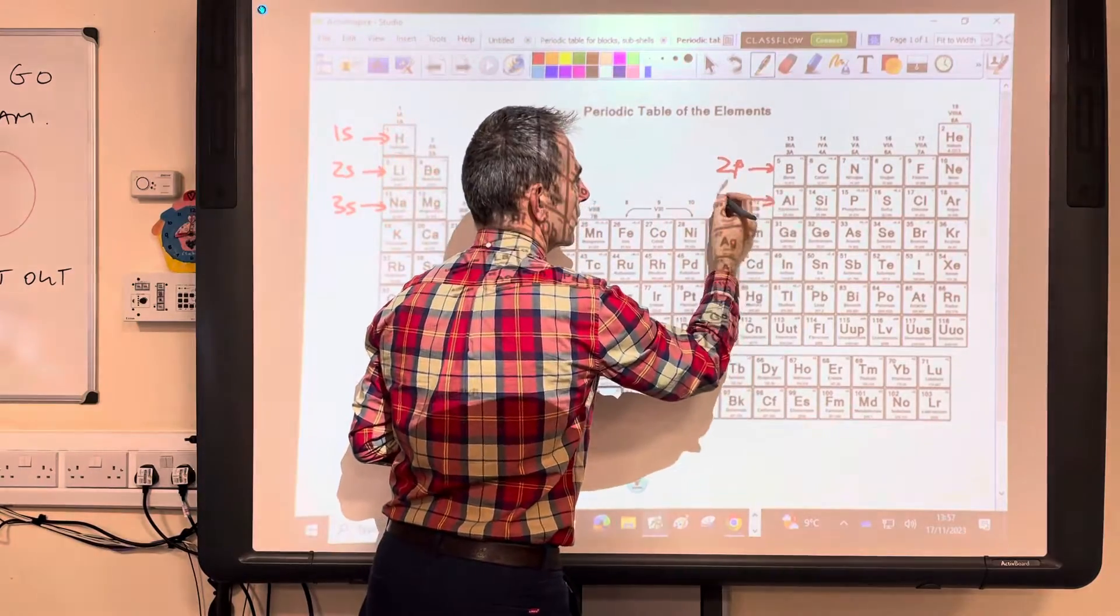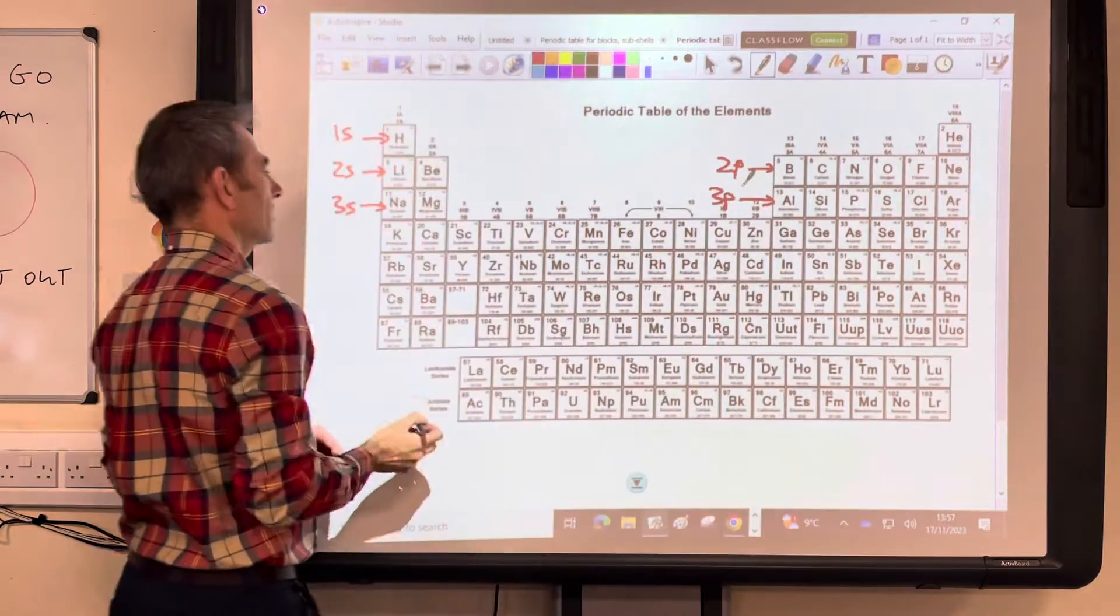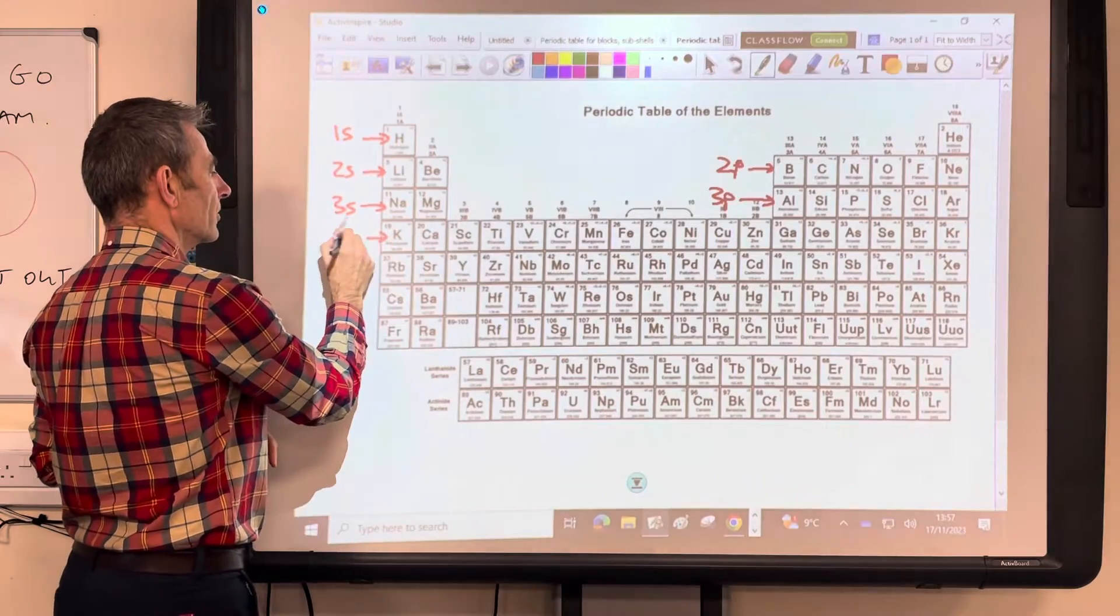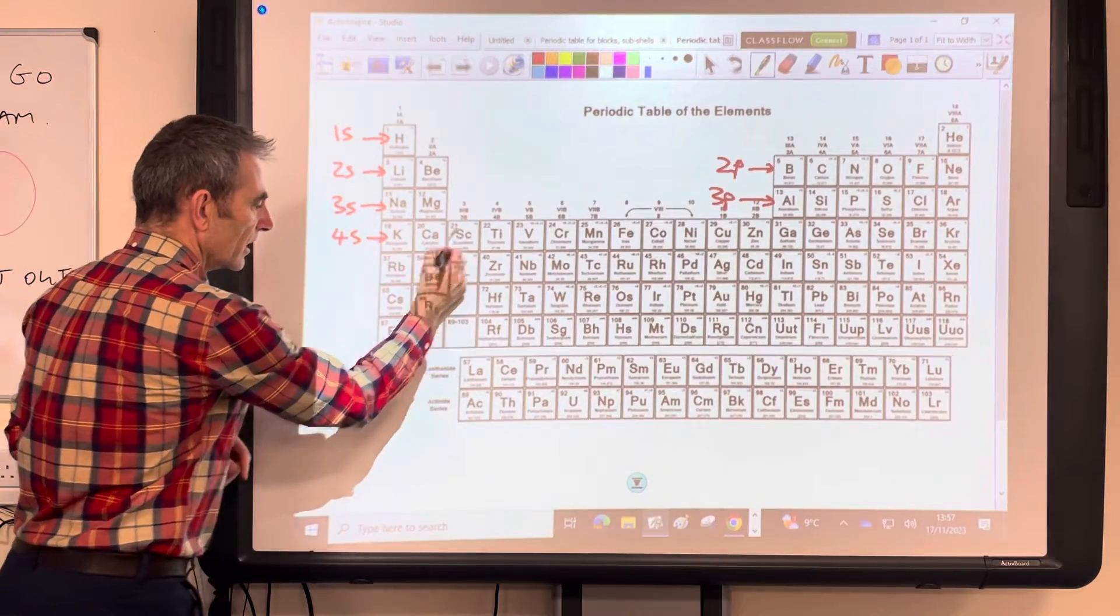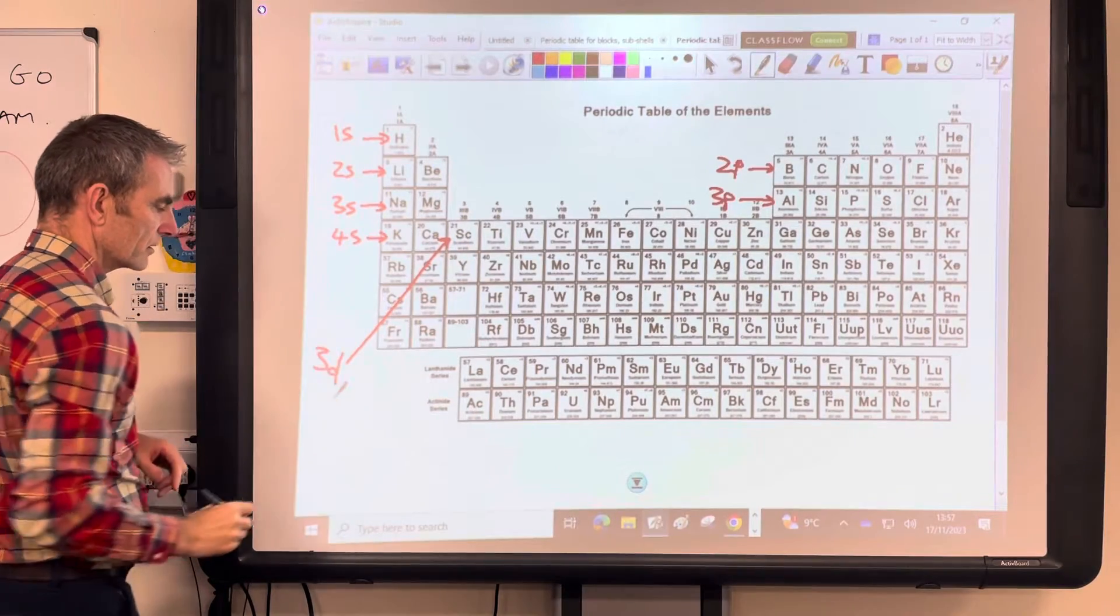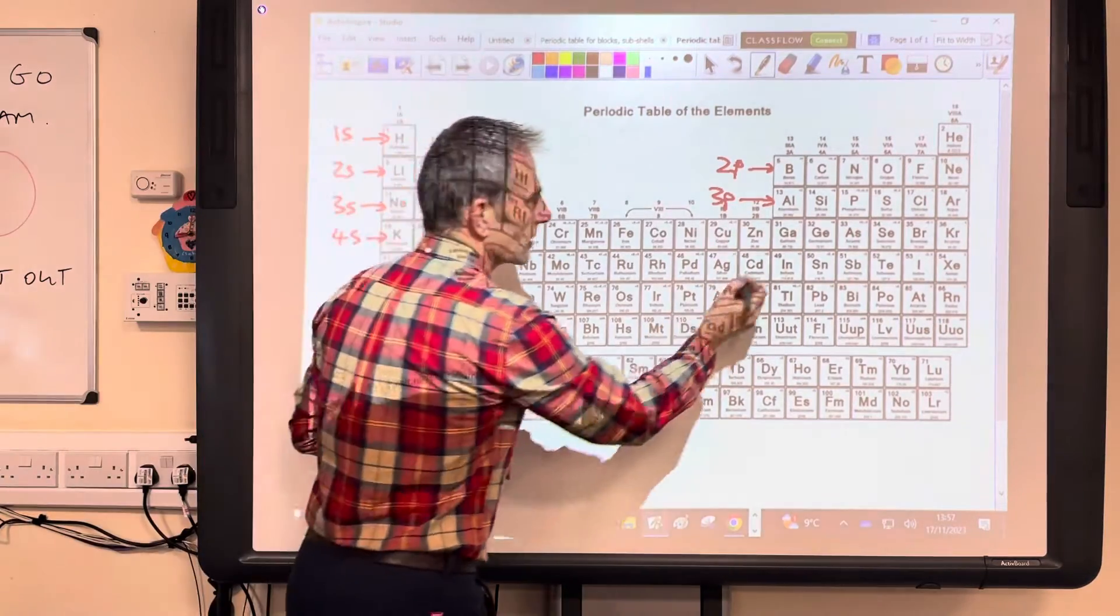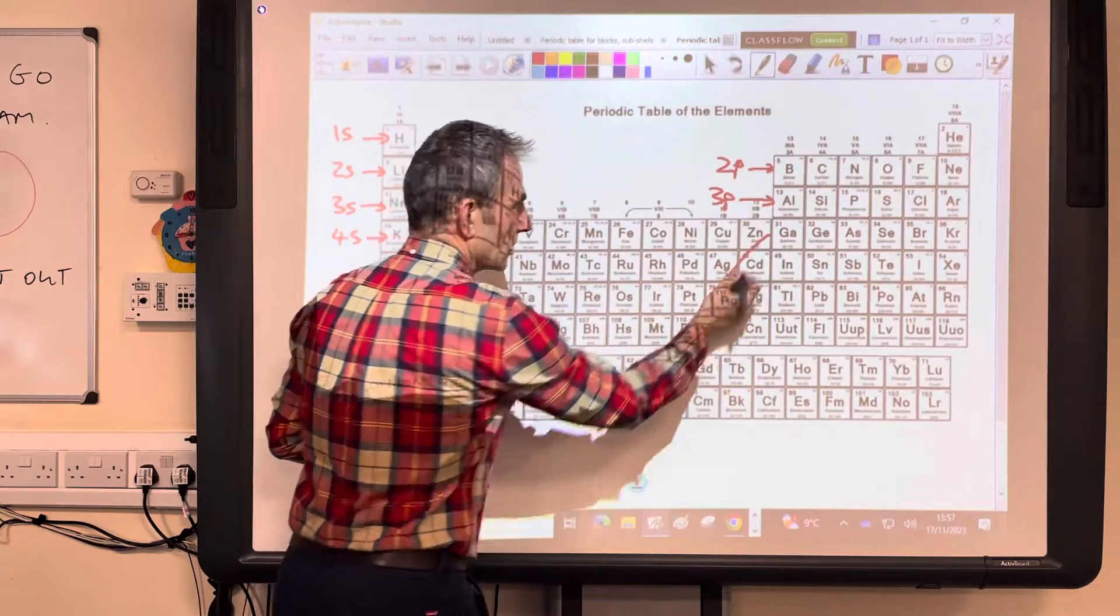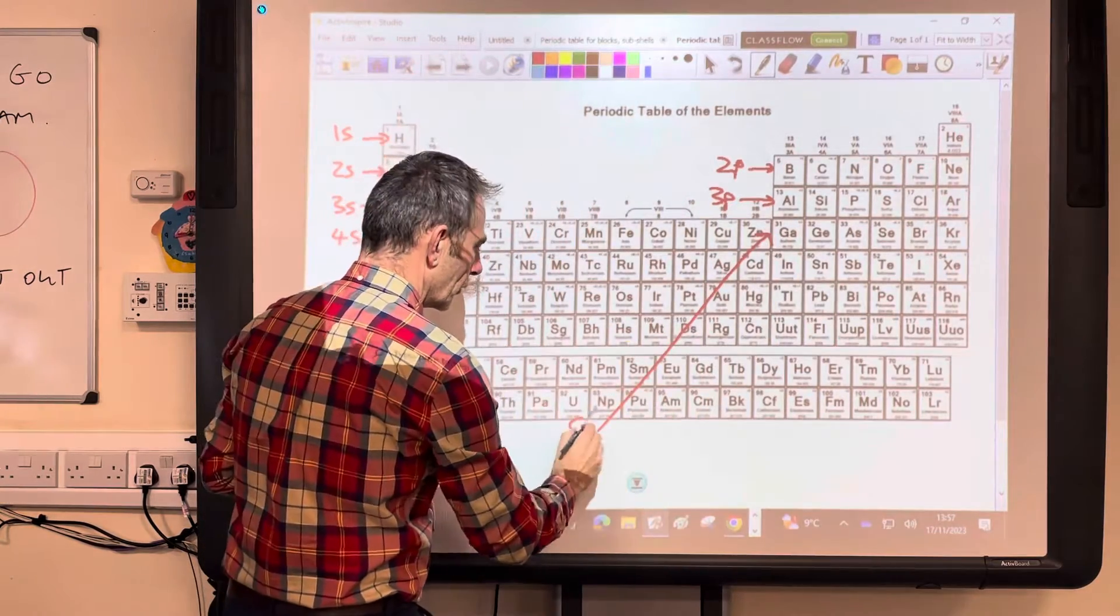Aluminium, start filling up 3p. Potassium, start filling up 4s. And then when you get to scandium, start filling up 3d. And when you get to gallium, you start filling up 4p.